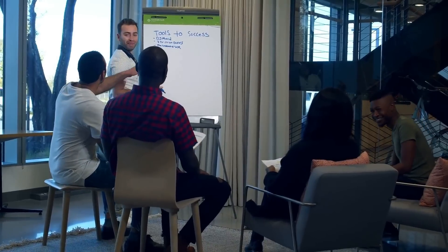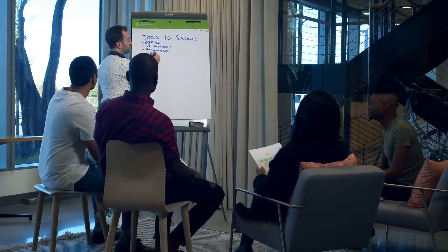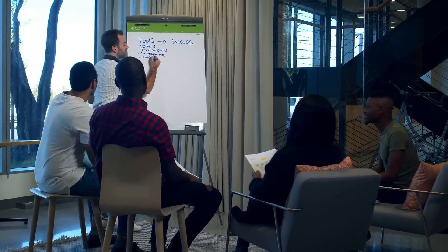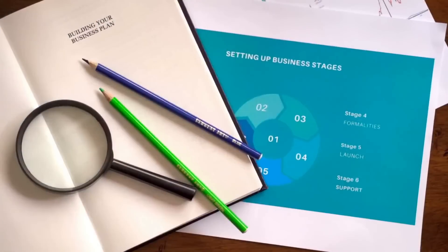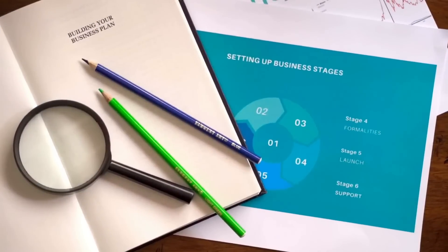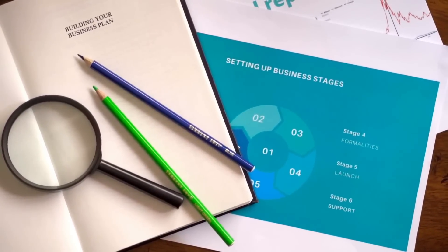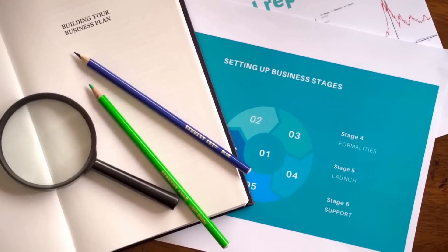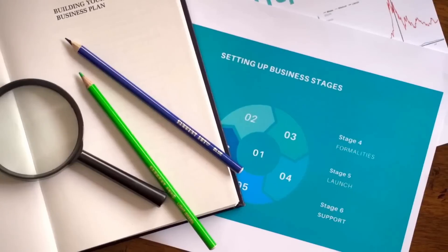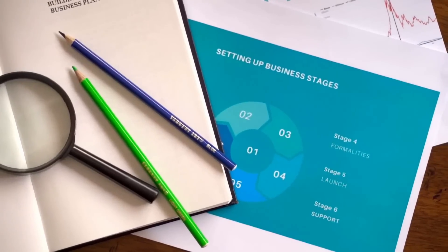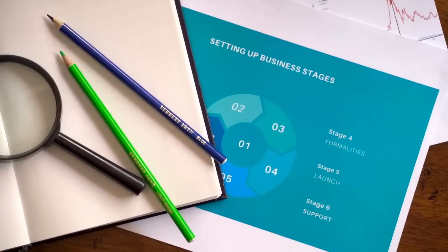A SWOT analysis will help you identify the strengths, weaknesses, opportunities, and threats of your business. For example, if you are starting a new restaurant, your business plan should include a detailed analysis of the local competition, target customers, menu, pricing strategy, staffing, and marketing strategy.